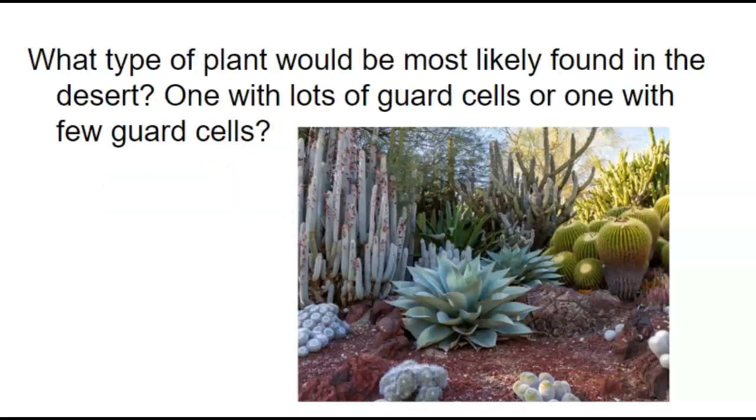So knowing that our guard cells need water to open and close, what do you think would happen if they didn't have a lot of water? So in the desert, what type of plant would be found in the desert? One with a lot of guard cells or one with few guard cells? You might think to yourself, well, the desert is really dry. There's not a lot of rain. So they're not going to have access to a lot of water to be able to open and close those guard cells.